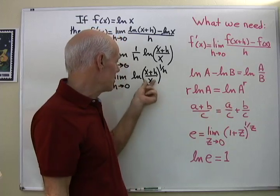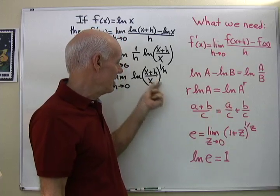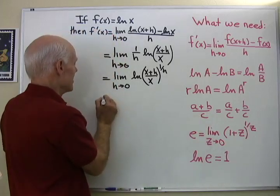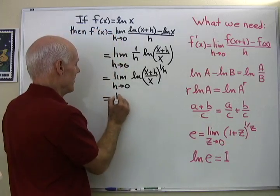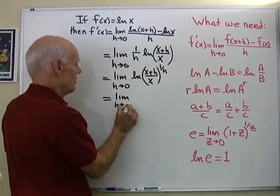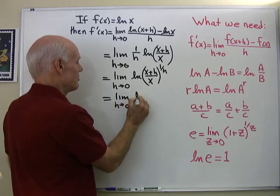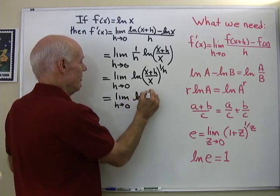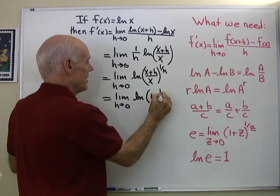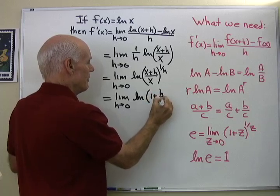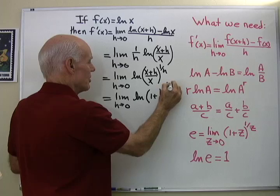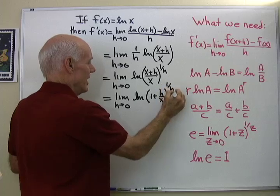Next I rewrite the expression inside the logarithm: (x+h)/x = 1 + h/x. So we now have lim(h→0) of ln((1 + h/x)^(1/h)).